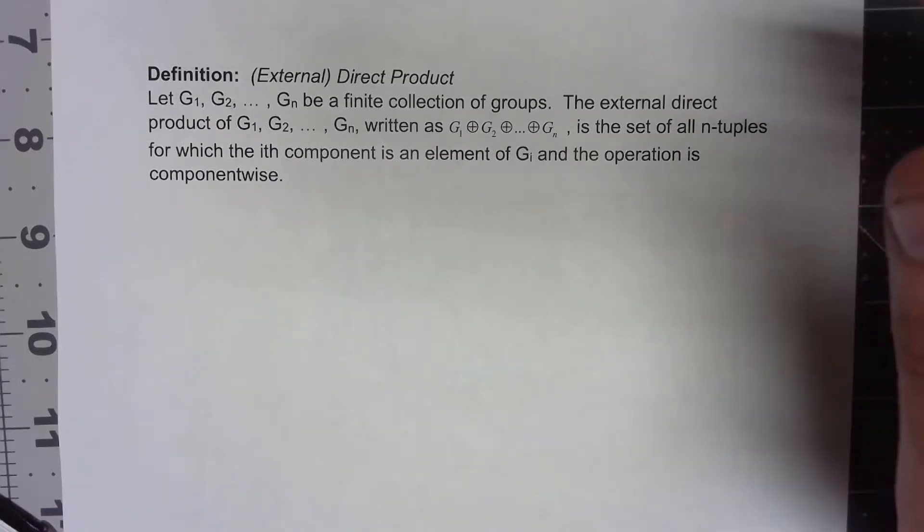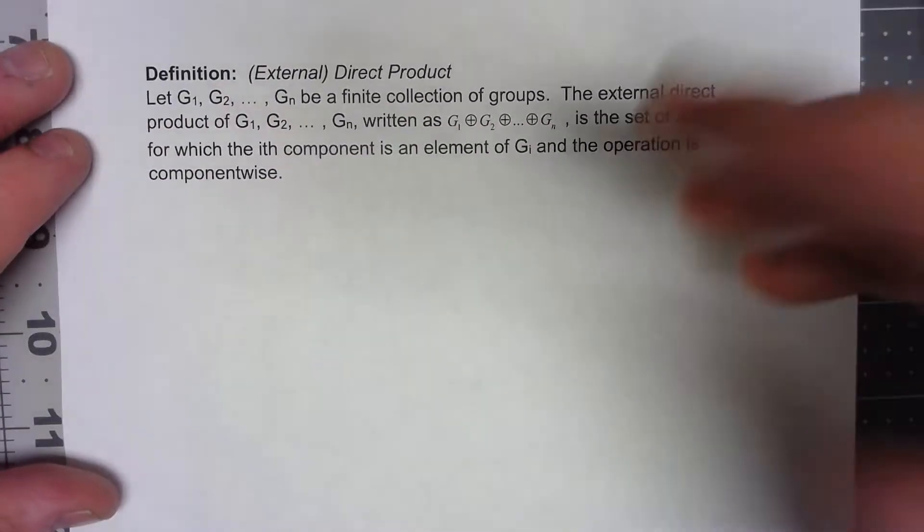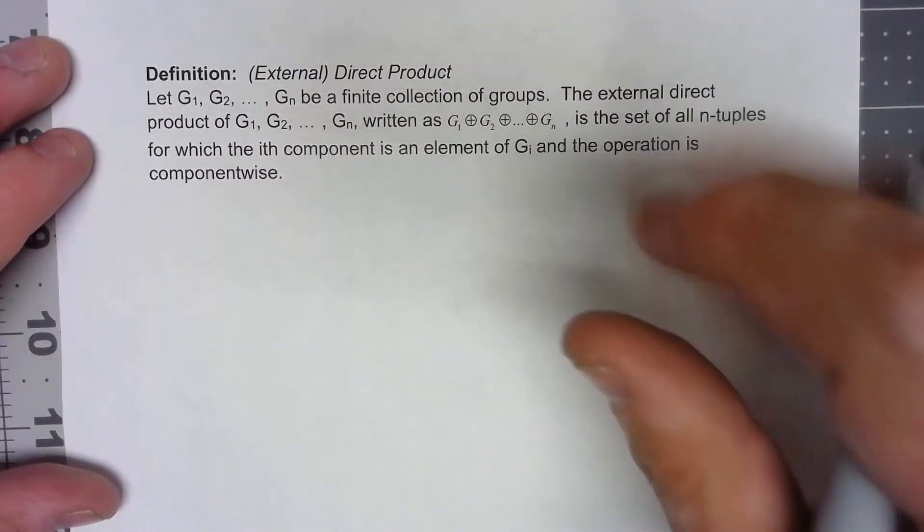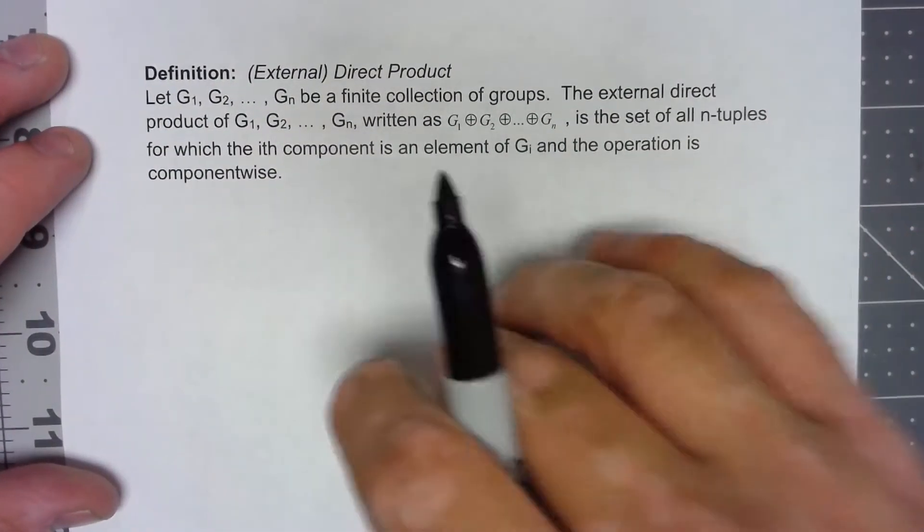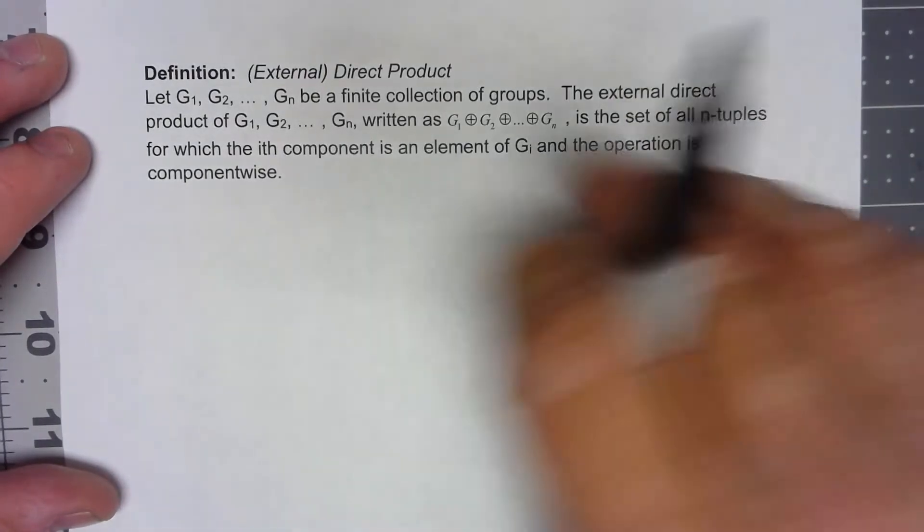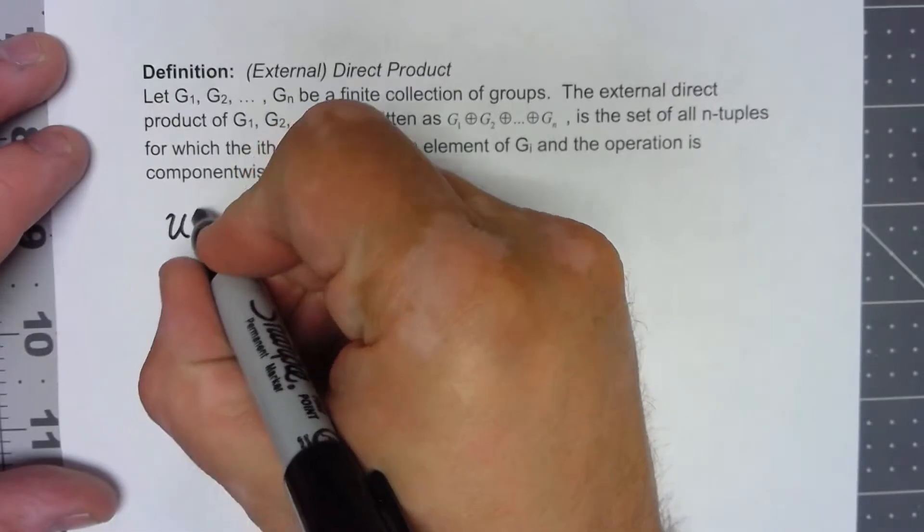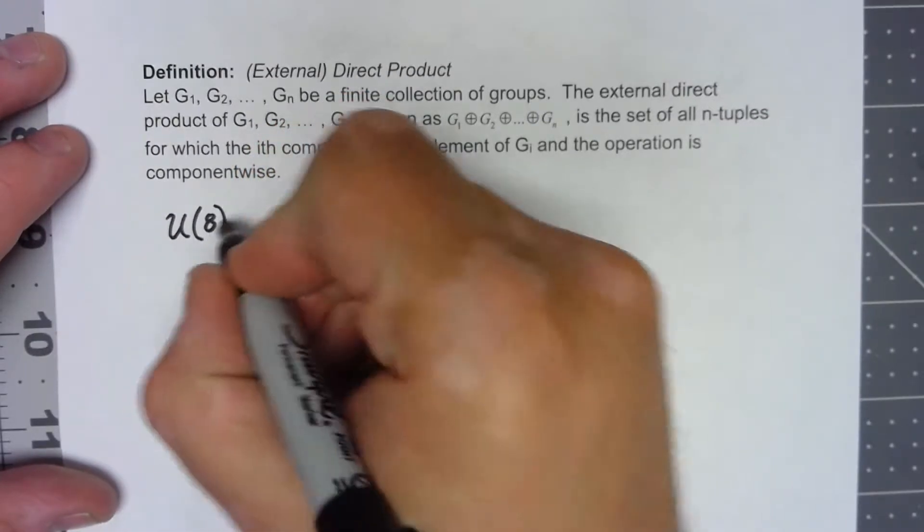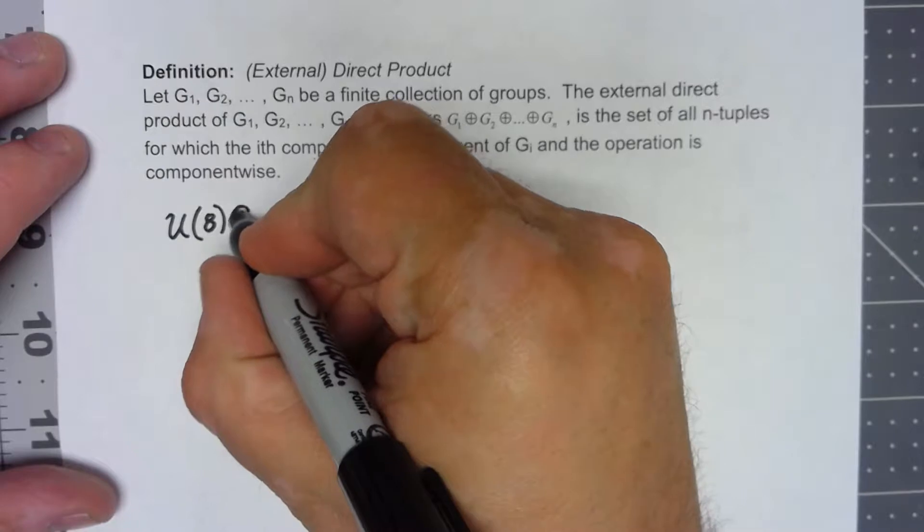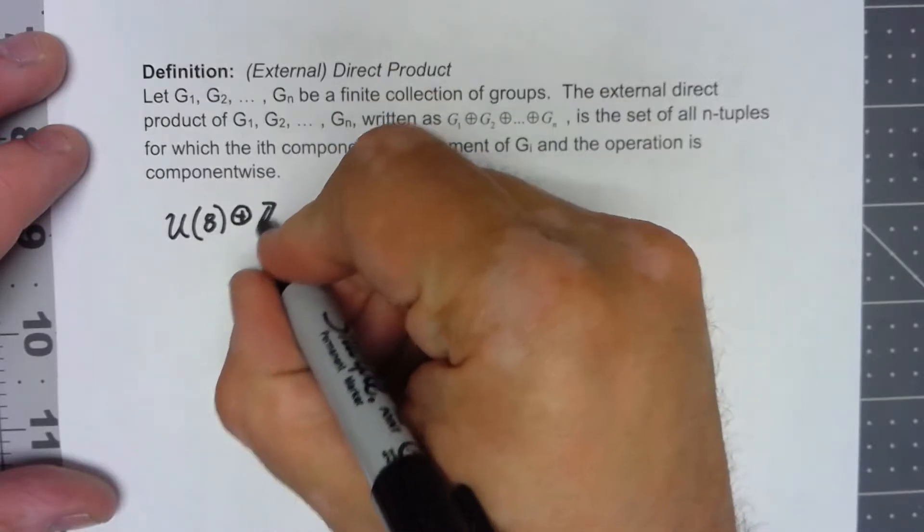Let's take a look at a simple example. The book has a bunch of examples where they do the same type of group direct product together, but it doesn't have to be. I can do something like take a look at U(8) direct product with Z3.